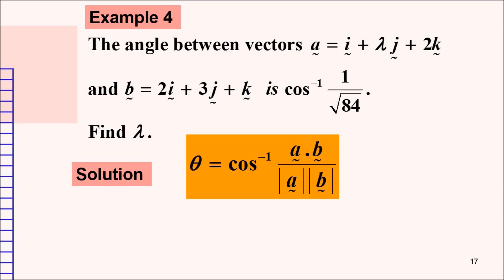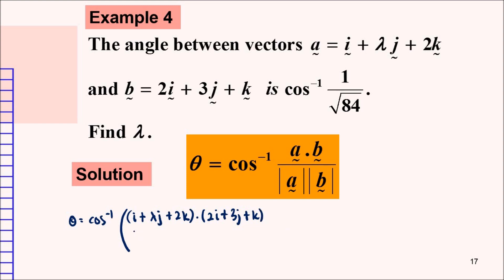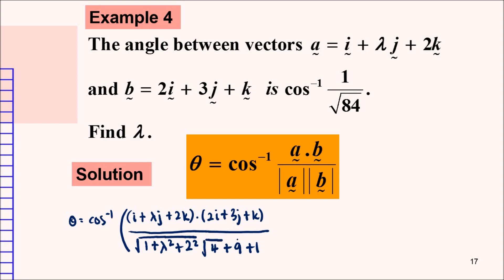If we write that down, θ equals inverse cos of — so vector a is i plus λj plus 2k, dot product with vector b which is 2i plus 3j plus k — divided by the magnitude of a, which is the square root of 1 plus λ² plus 2², times the magnitude of b.